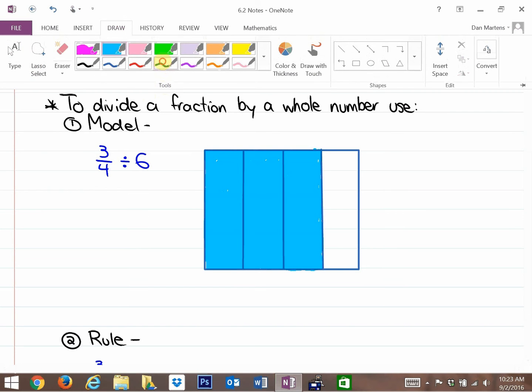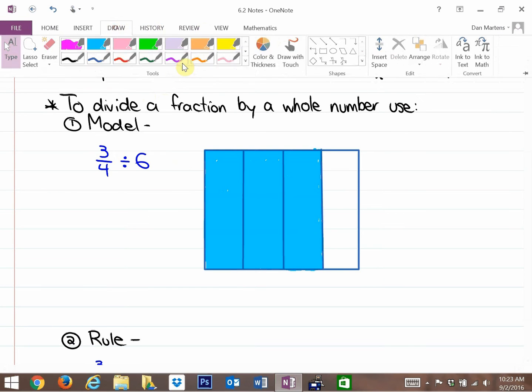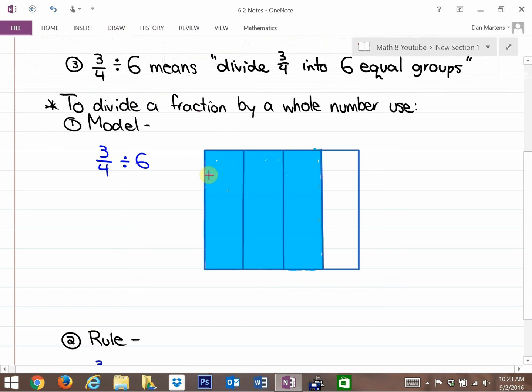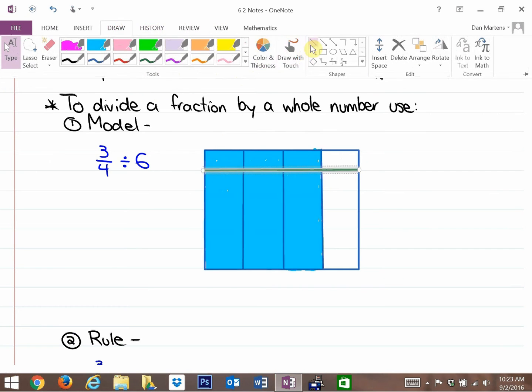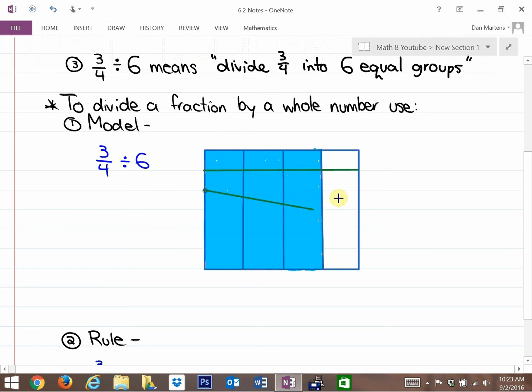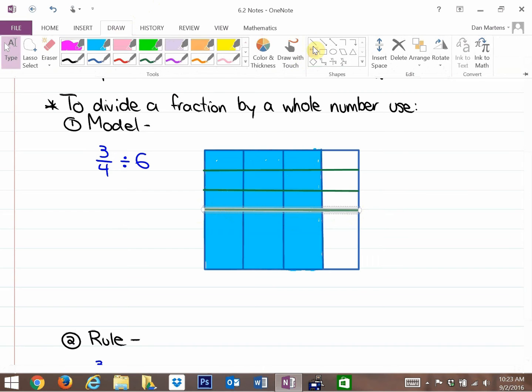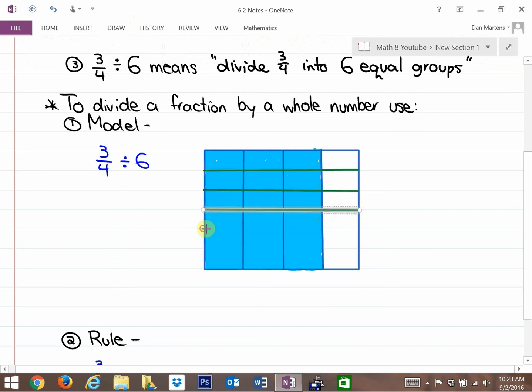Here's what that would look like. I'm going to divide this into six equal parts, and generally it's much easier to do this horizontally. Here's six equal parts—here's a part, here's a part.